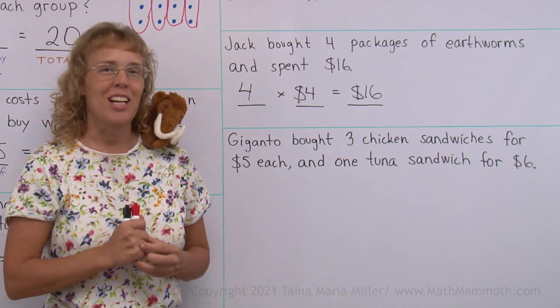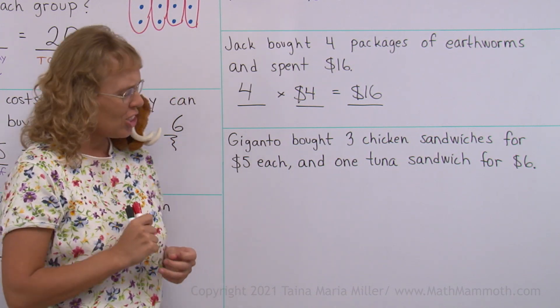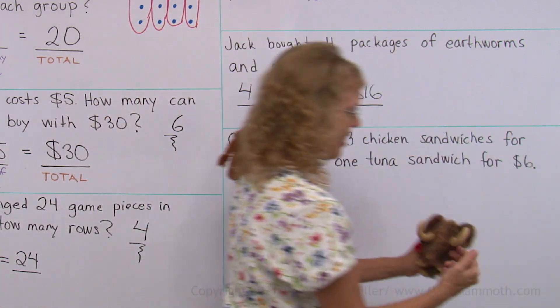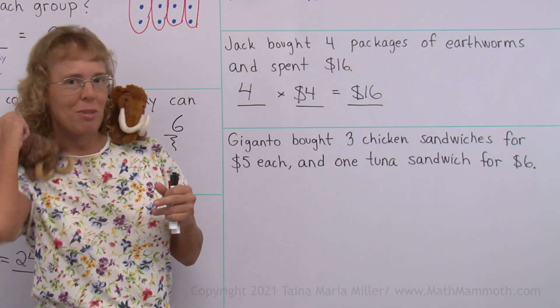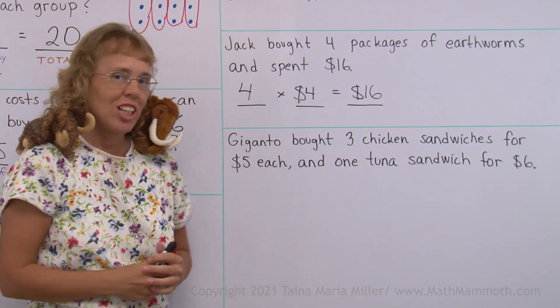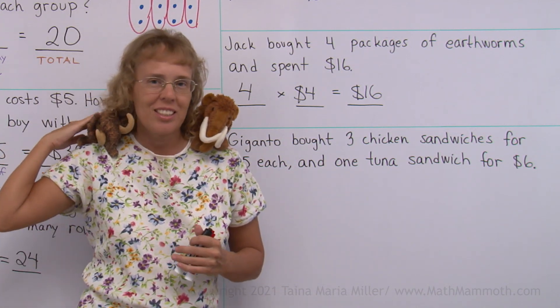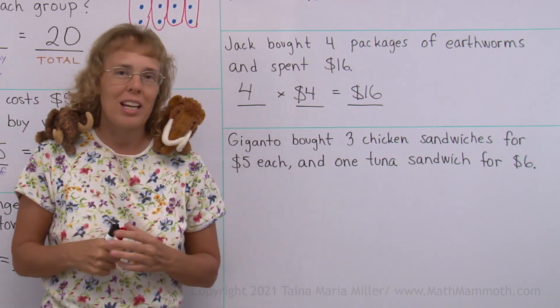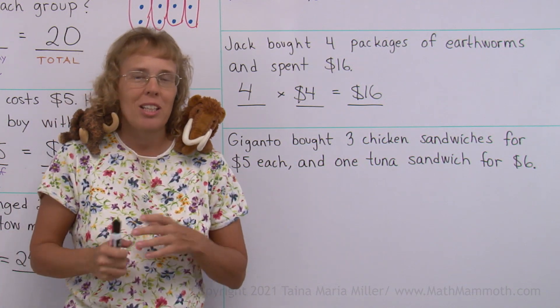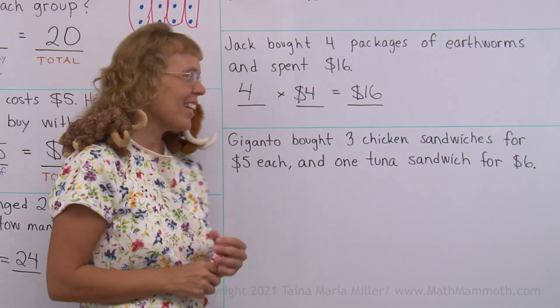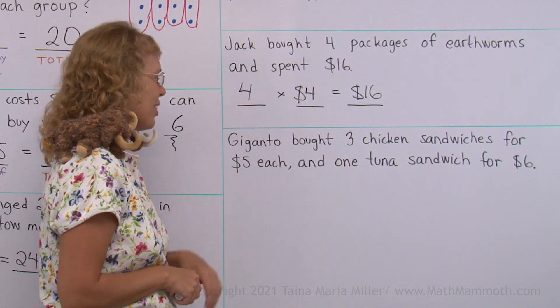And then lastly, we're gonna have a special guest. Giganto, come here. There you come. Just sit on my other shoulder and try not to fall down, okay? Giganto wanted to come. He's Mathie's cousin, by the way. Giganto wanted to come because he heard about that problem we had a few lessons back, where we had all these yummy sandwiches. So he wanted to get some too, I guess.